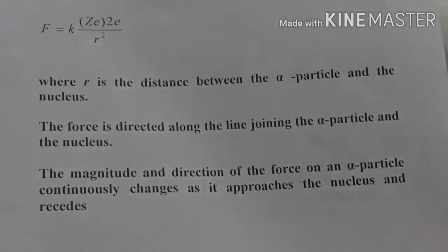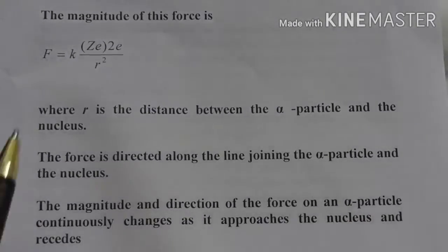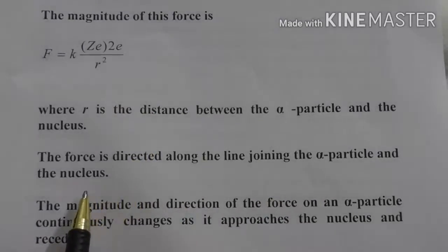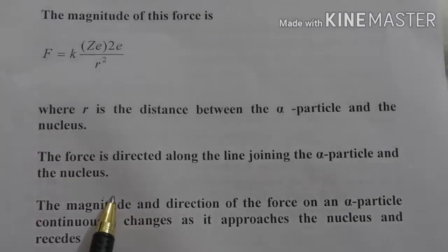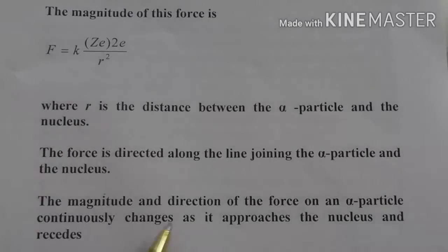And this force, as you know from Coulomb's law, is acting along the line joining the alpha particle and nucleus. And the magnitude and direction of force on the alpha particle continuously changes. You can see in the equation, because distance changes, the force changes.